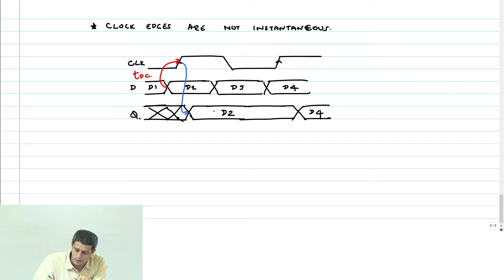What is Tdq equal to? Tdc plus Tcq. So, now my point is, I want to make Tdc smaller and smaller. That is, I am going to bring the data change closer and closer to the sampling edge and see when the flop fails.